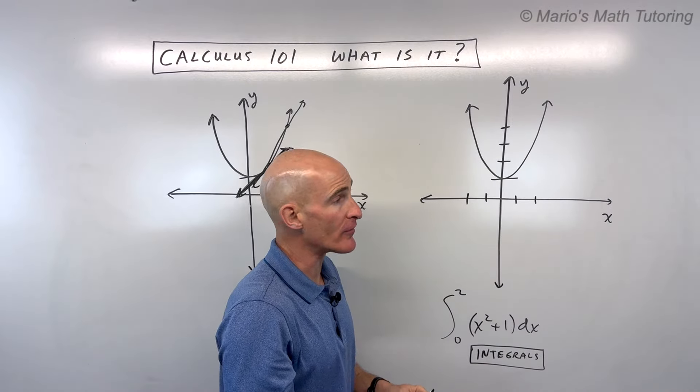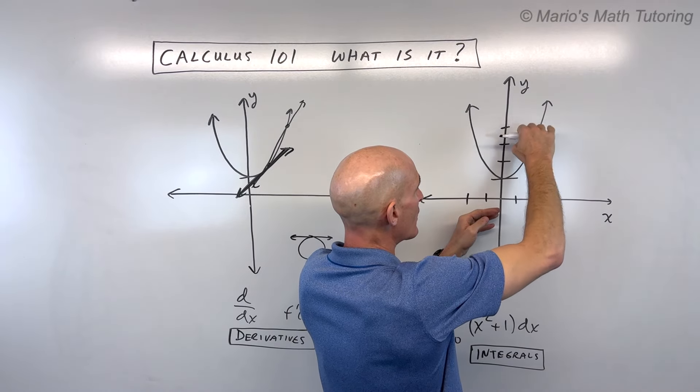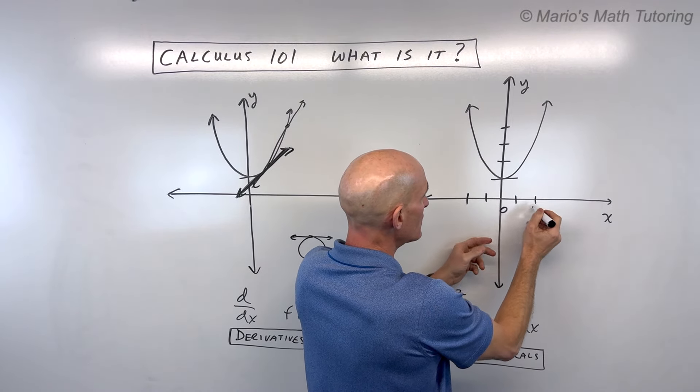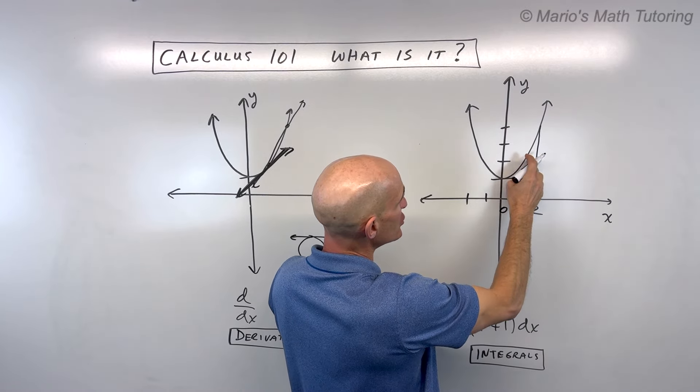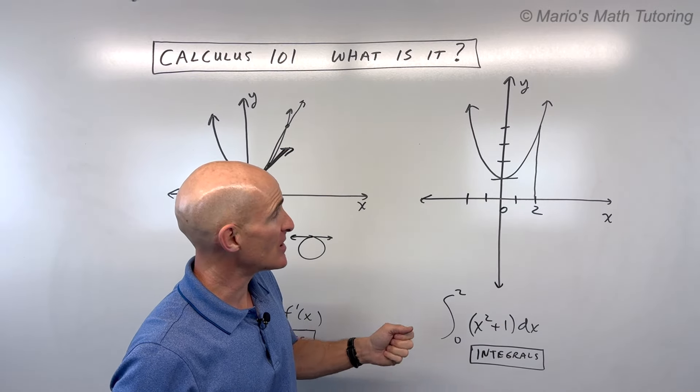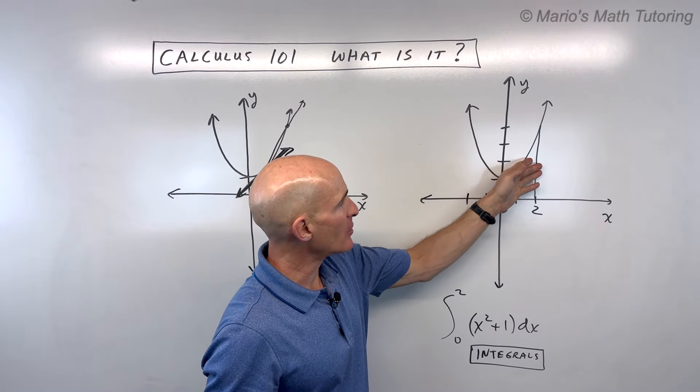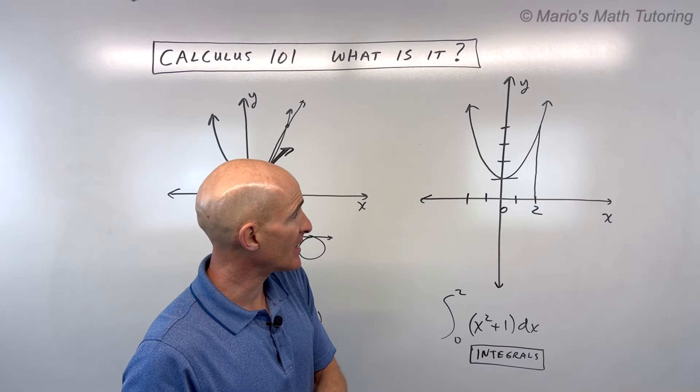So say, for example, if I wanted to find the area underneath this parabola, but from zero to two. So let's just kind of draw that right here. Now, it's an irregular shape, it's not like a nice triangle or trapezoid or a shape that we're familiar with. How would we get this exact area of this region? That's one of the problems that we tackle in calculus.